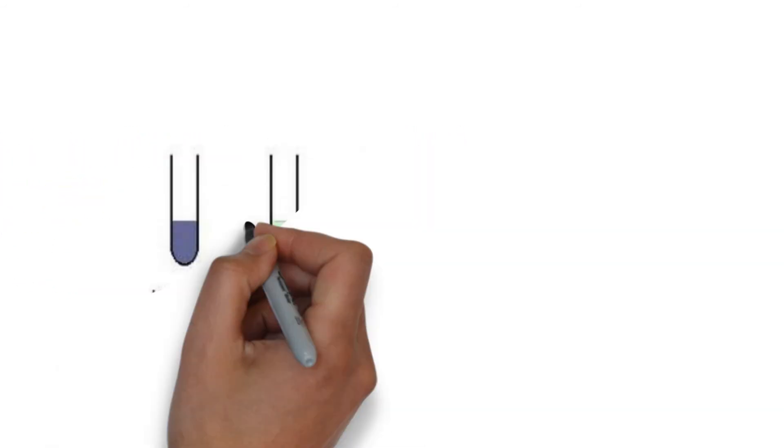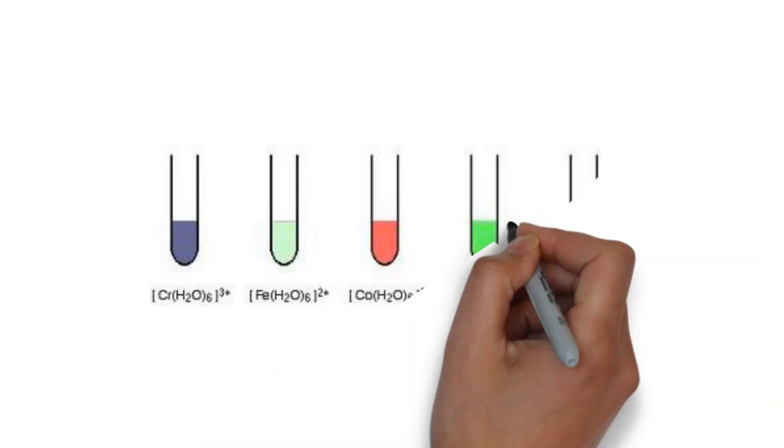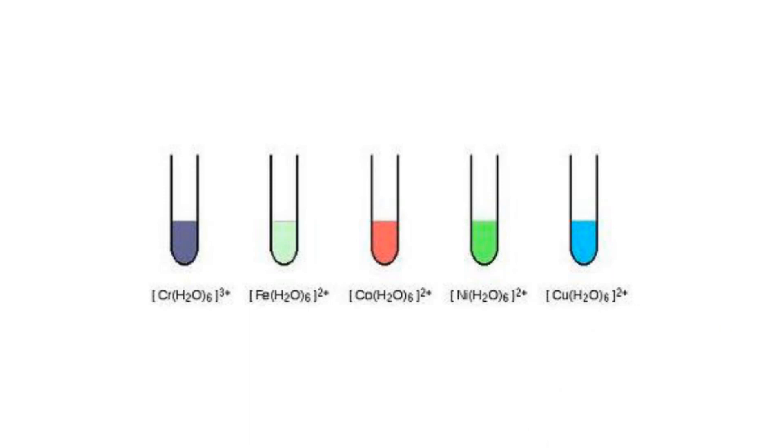In the diagram, different complexes of transition metals are given and their colors are seen. This is the actual color.